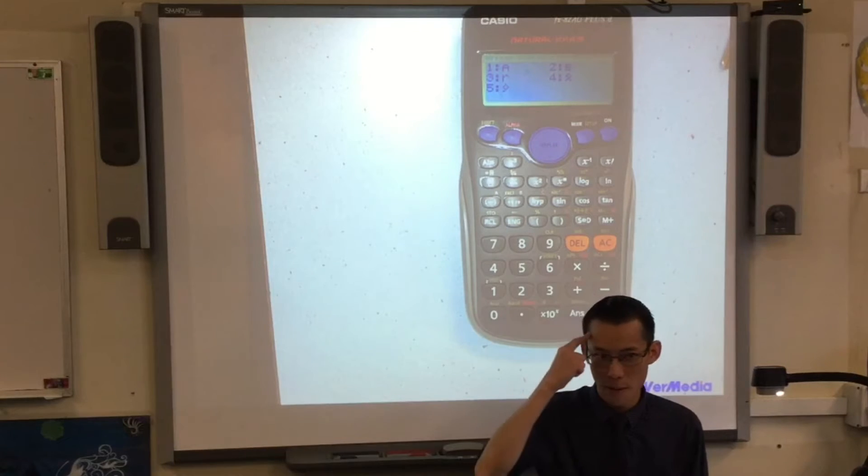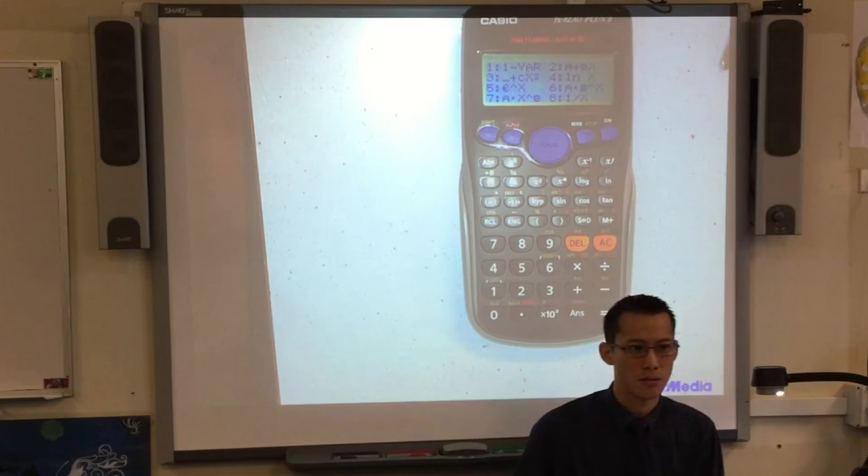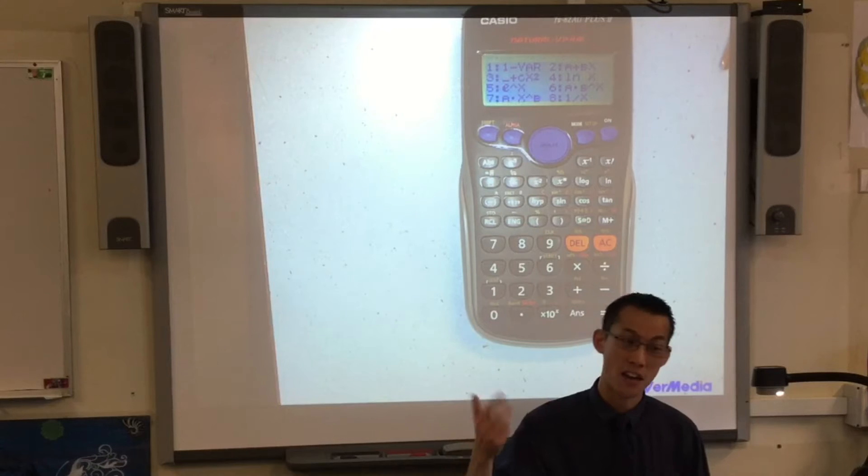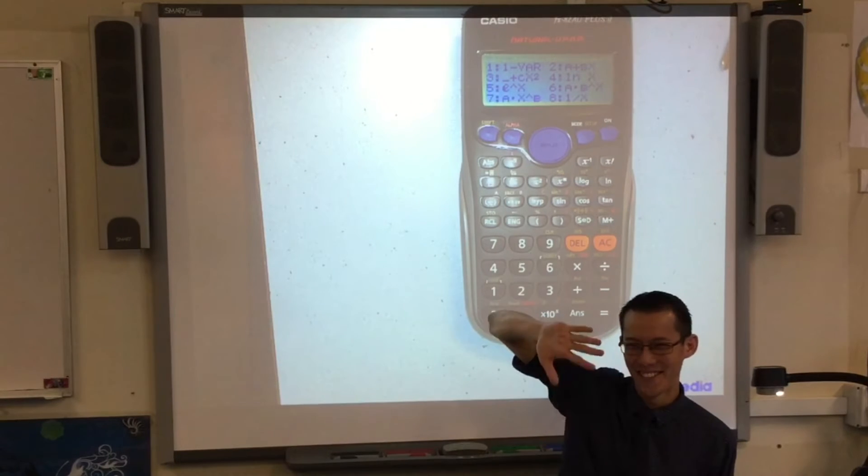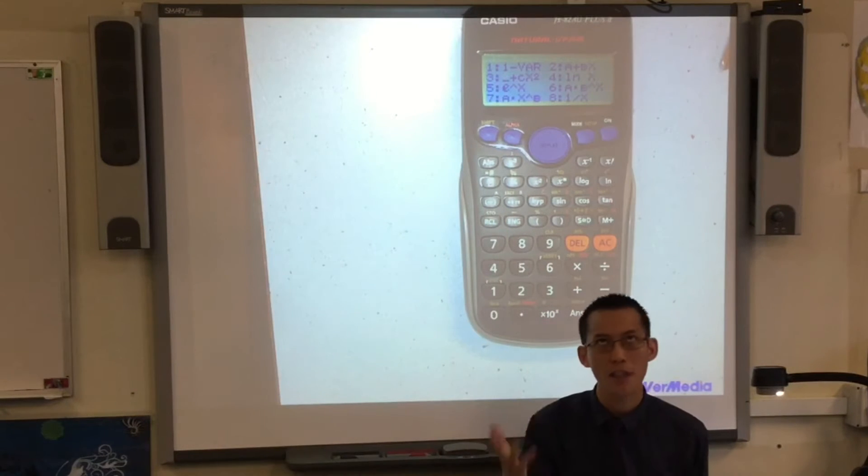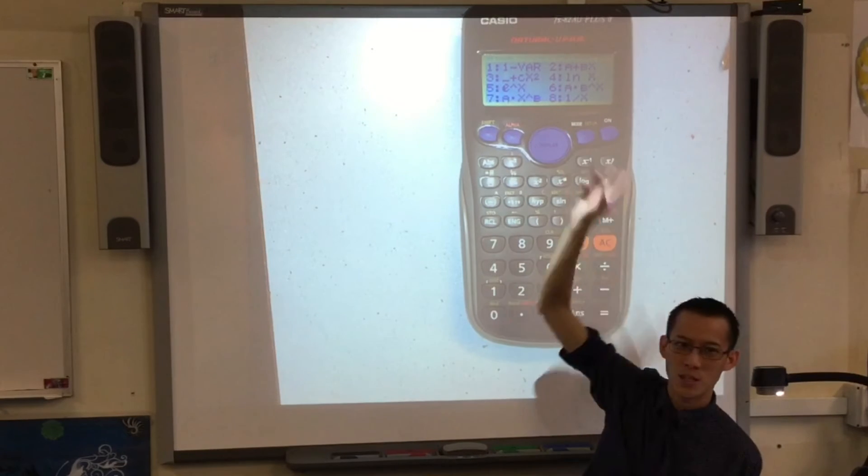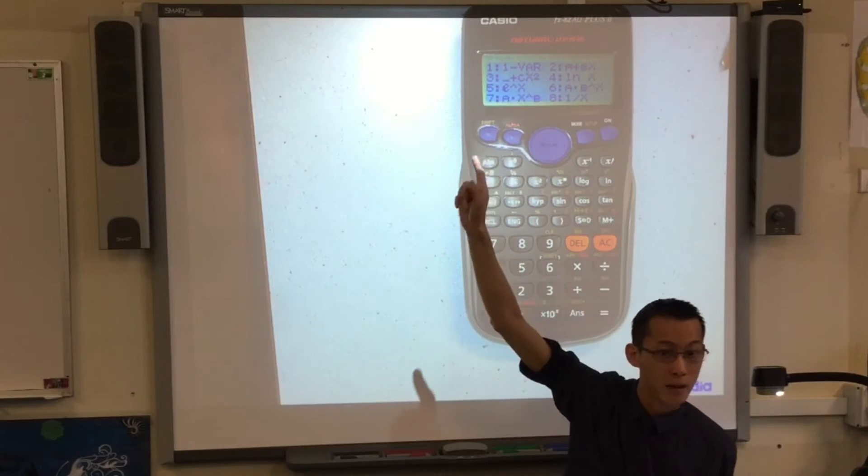Just remember that for a second. Remember when we went to mode and I said stat, and then I asked you to choose. And there wasn't a label that said bivariate data. And we said it's option two. And I just said don't worry about it right now. Now I want you to pay attention to what it says. Do you see what A plus BX says? A plus BX is just another way of writing the line of best fit, the regression line. The A is going to be the y-intercept. The B, this is why it's a bit confusing and why I didn't want you to be distracted by it before. In this case, they've used B to indicate gradient.